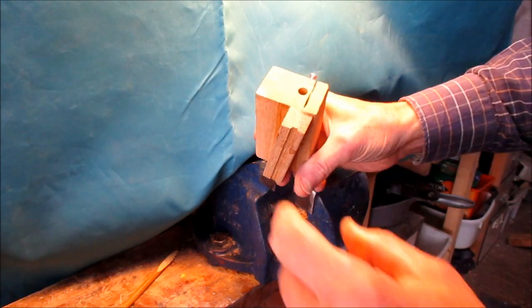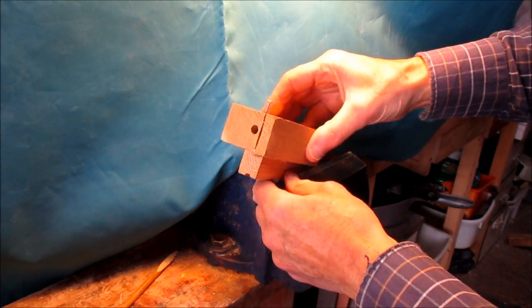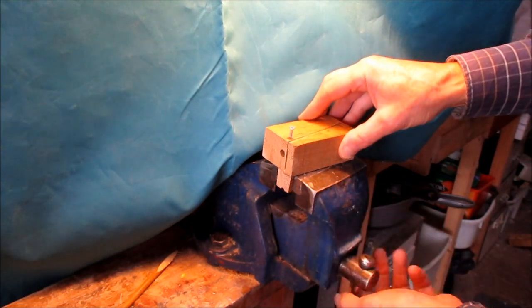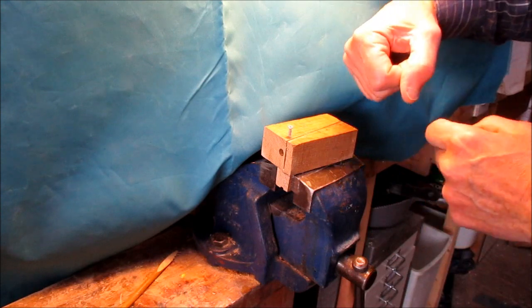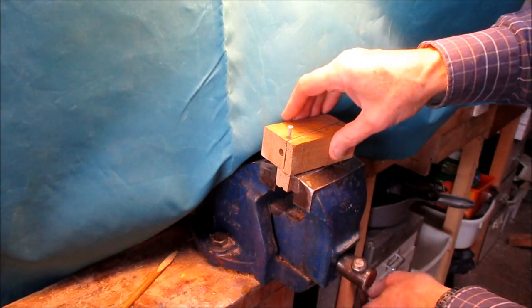This little block here is just glued on so that when it's mounted in the vice thusly, you're sawing at a sensible angle rather than banging your elbows on things.